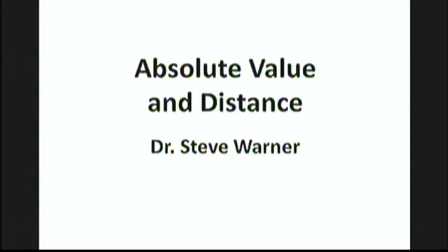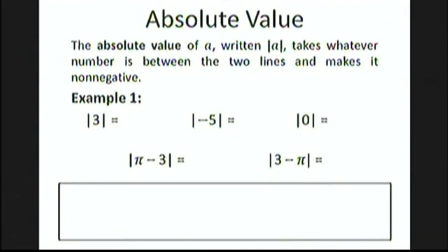Hello everyone, I'm Dr. Steve Warner, and today I'm going to talk about absolute value and distance. The absolute value of A, written as an A with two bars around it, just takes whatever number is between the two bars and makes it non-negative. So as some simple examples: the absolute value of 3 is just 3, the absolute value of negative 5 is positive 5, and the absolute value of 0 is 0. Zero is a non-negative number too.